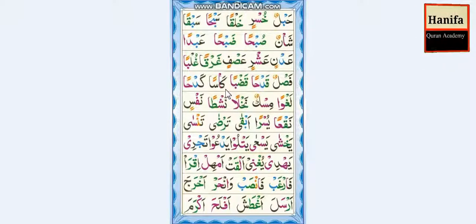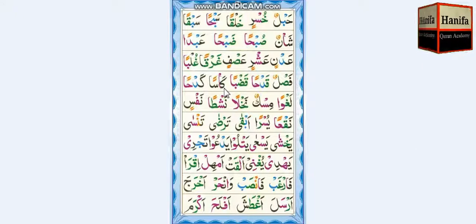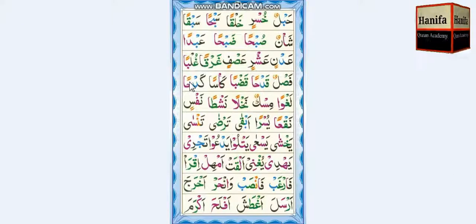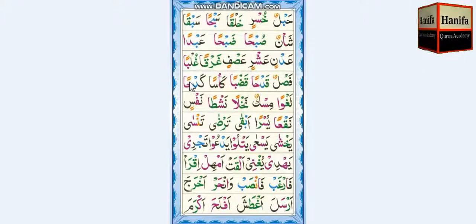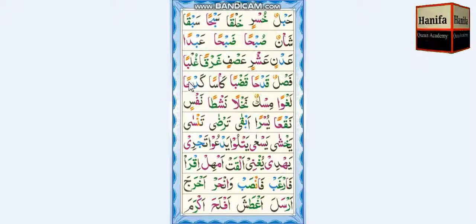Ka. Sin, Fathatan — san. Ka-san. Kaf, Dal, Fatha — kad. Ha, Fathatan — han. Kad-han.